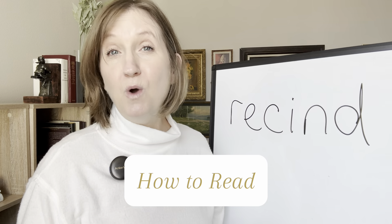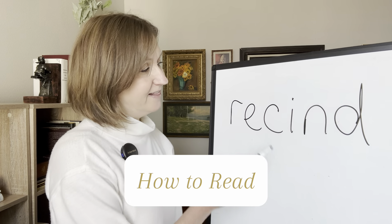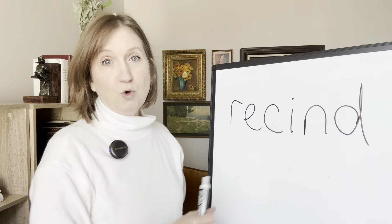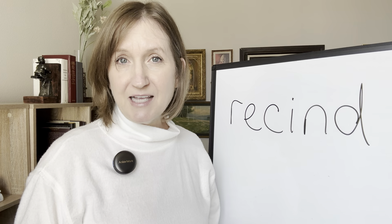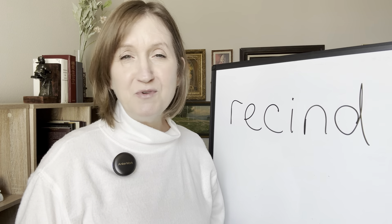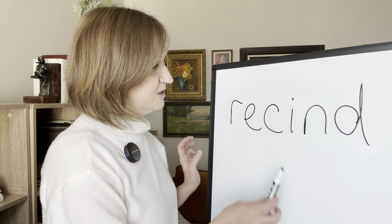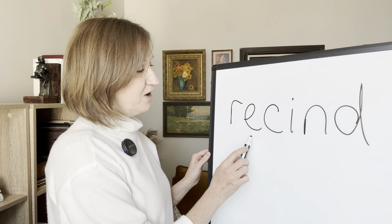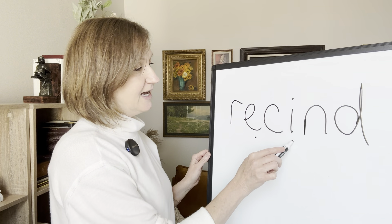We're learning how to read one word at a time, and today we're looking at this word. We're going to start by identifying the vowel sounds, because if you can read the vowels, you can read the word. In this word, there are two vowel sounds: this e and the i.